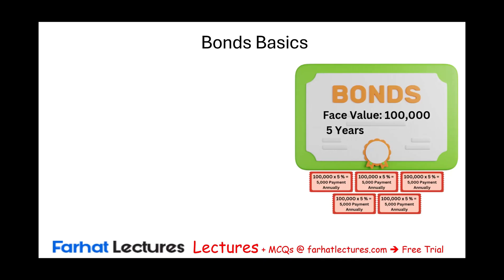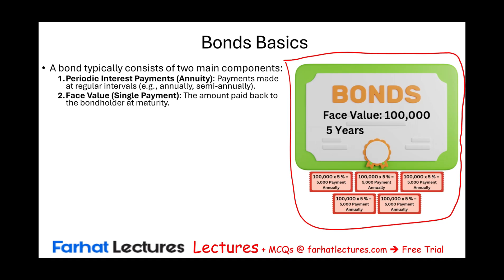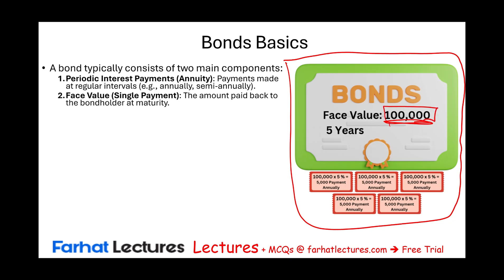A bond typically consists of two main components: the periodic interest payments and the face value or principal amount. When an investor buys a bond, they're lending money to the company. The company gives you a bond — a piece of paper that promises two things: they'll pay back the original amount, the face value, and they will pay this amount only once.